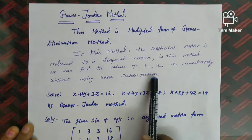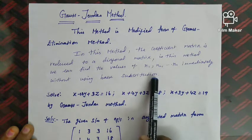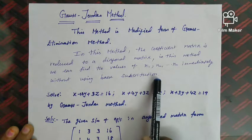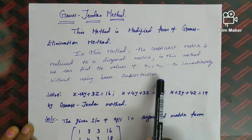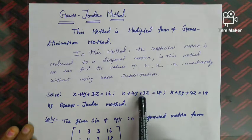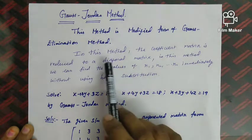The Gauss-Jordan method works as follows: the given system of equations is written in augmented matrix form, where the coefficients of the equations are arranged in a matrix. After writing the augmented matrix form, we use row operations to bring the matrix into diagonal form.